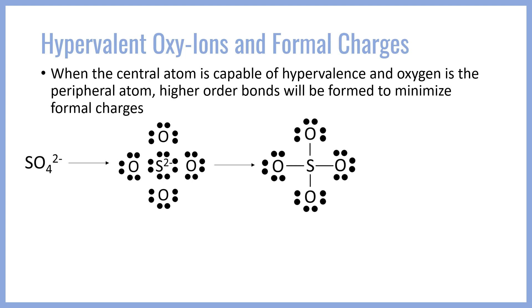This is a valid Lewis structure for SO4 2-, since we have a full set of octets on every atom. However, we will have formal charges on each atom as well. Formal charges put strain on the molecule due to their electrostatic interaction between plus and minus charges. So if we calculate the formal charges, we find that each oxygen carries a minus one charge, and the sulfur carries a plus two charge. We want to minimize those charges by folding in the plus and minus charges together.